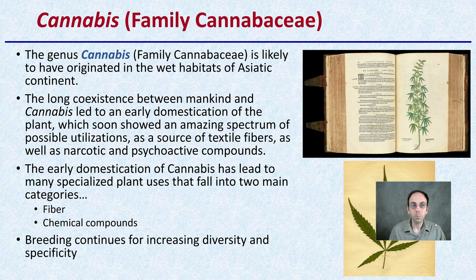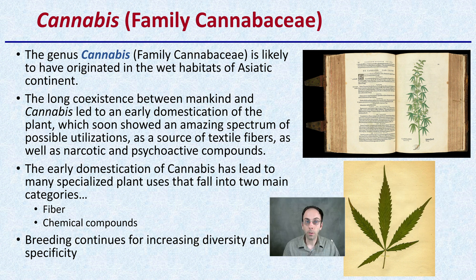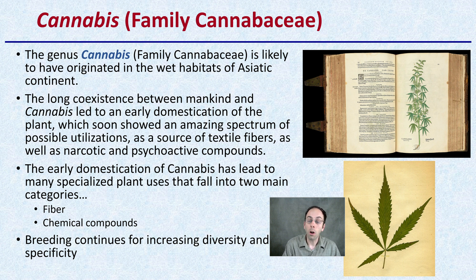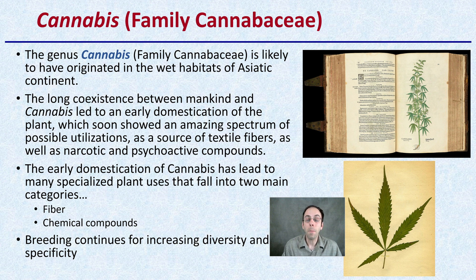So first off, cannabis is a genus and it's likely to have originated in the wet habitats of the Asian continent. It's been a long coexistence with mankind, which led to its early domestication. The reason why it was domesticated is because of its many uses and possibilities.